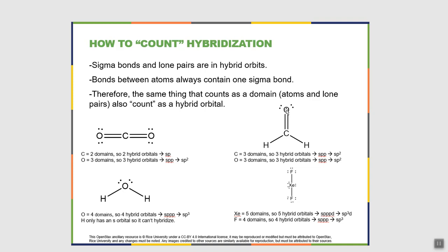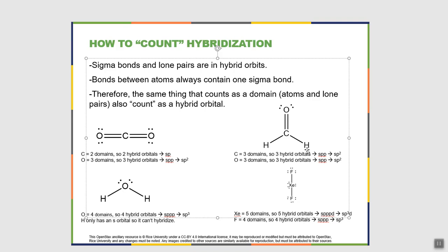In formaldehyde, carbon is bonded to an oxygen, a hydrogen, and another hydrogen — three domains. Three domains means three hybrid orbitals: s, p, p — sp2. The oxygen has a bond to carbon and two lone pairs — three domains, three hybrid orbitals — also sp2. Note that hydrogen doesn't hybridize because it only has s electrons. For water, oxygen has four domains: two lone pairs and two hydrogens. Four domains means four hybrid orbitals — s, p, p, p — sp3. Hydrogen again doesn't hybridize.